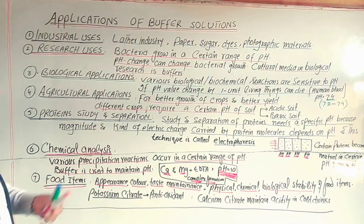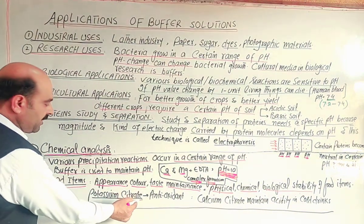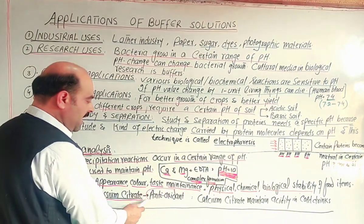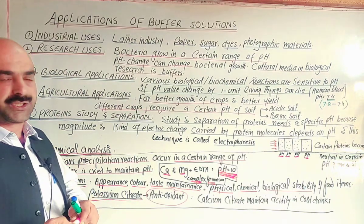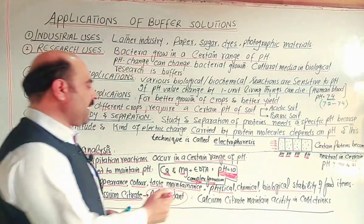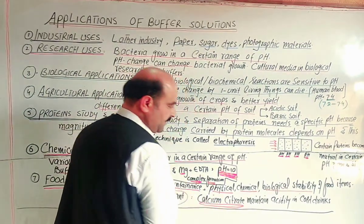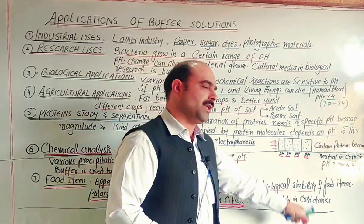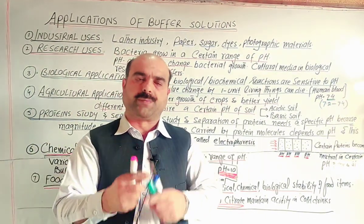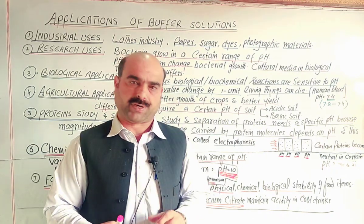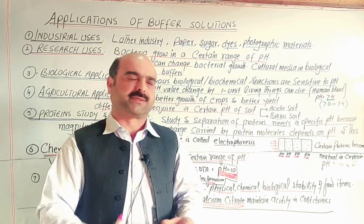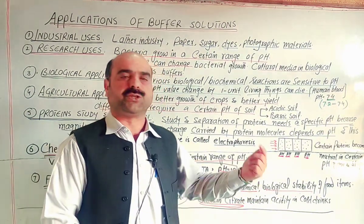For example, potassium citrate is an anti-oxidant — it works against oxidation and stops the oxidation of food items. Beyond that, calcium citrate is used to maintain acidity in cold drinks. In cold drinks, acidity — the sourness — is a physical property. To maintain this acidity in cold drinks, calcium citrate is added.